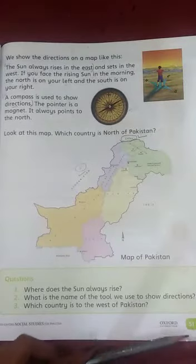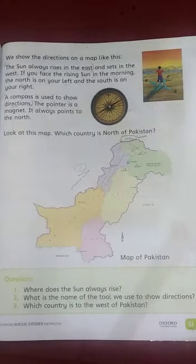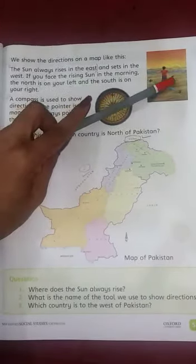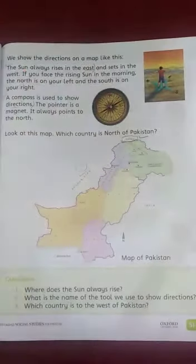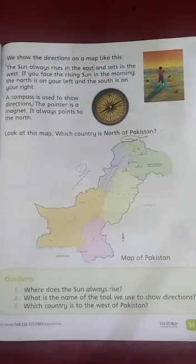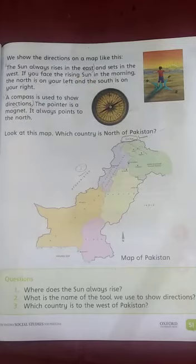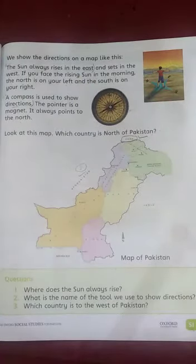Now open page number 51. Look at the picture. What is this boy doing? He is standing and his face is in front of the sun. Sun always rises in the east, so this is the east side. North is on the left side, and south is on the right side of this boy.